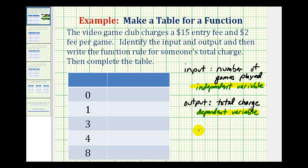If we let big C represent the total charge, it's going to be equal to the $15 entry fee plus $2 times the number of games that are played. So if we let X equal the number of games played, our equation would be C equals 15 plus 2X.